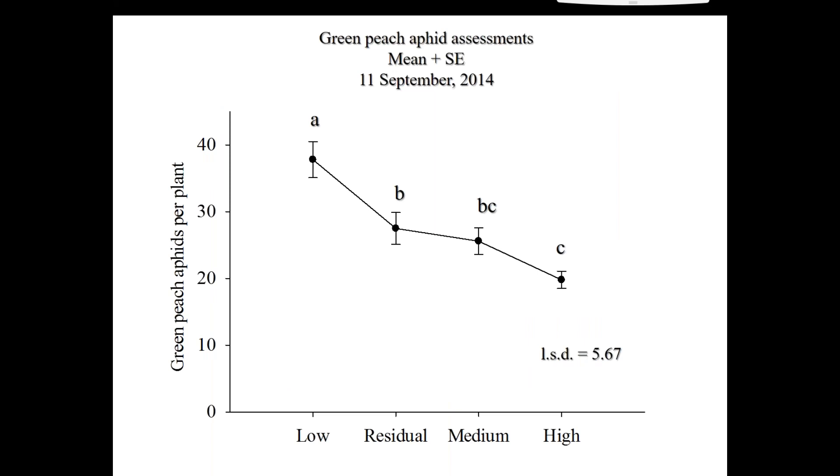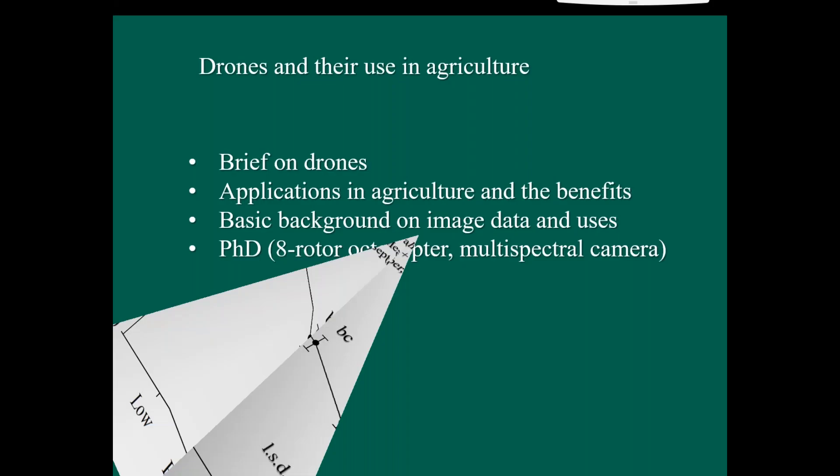And just to throw this one in, it doesn't have much to do with drones, but the green peach aphid assessments did certainly show much higher numbers in the potassium deficient. So rather than potassium being just a production limitation, we have all these flow-on negative effects such as pest and disease susceptibility, unfortunately.